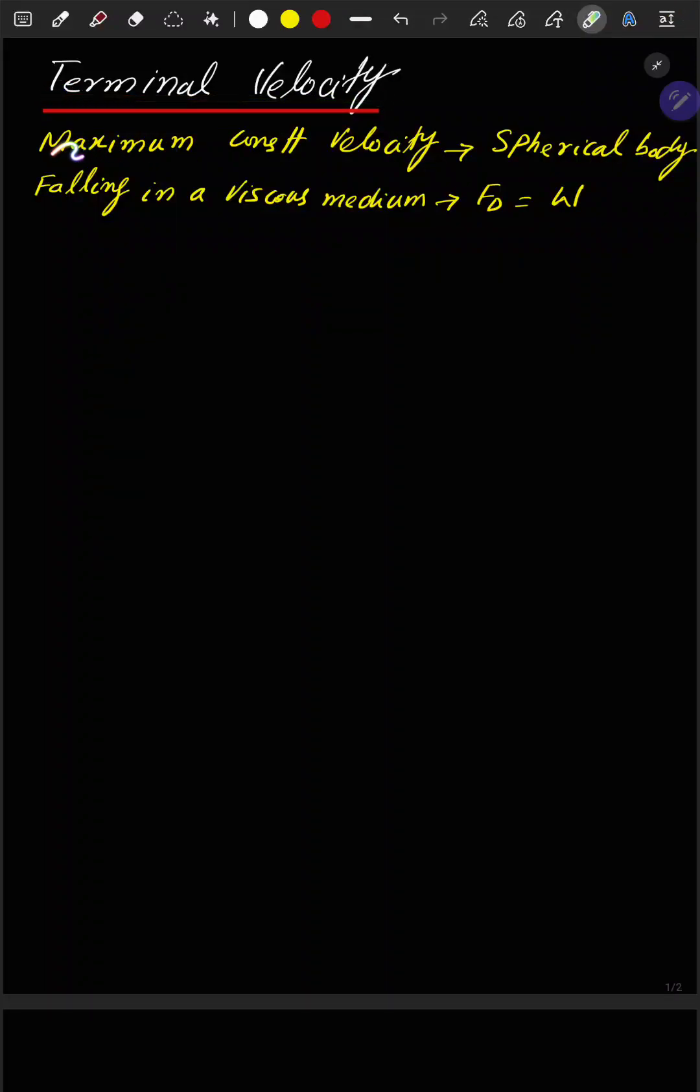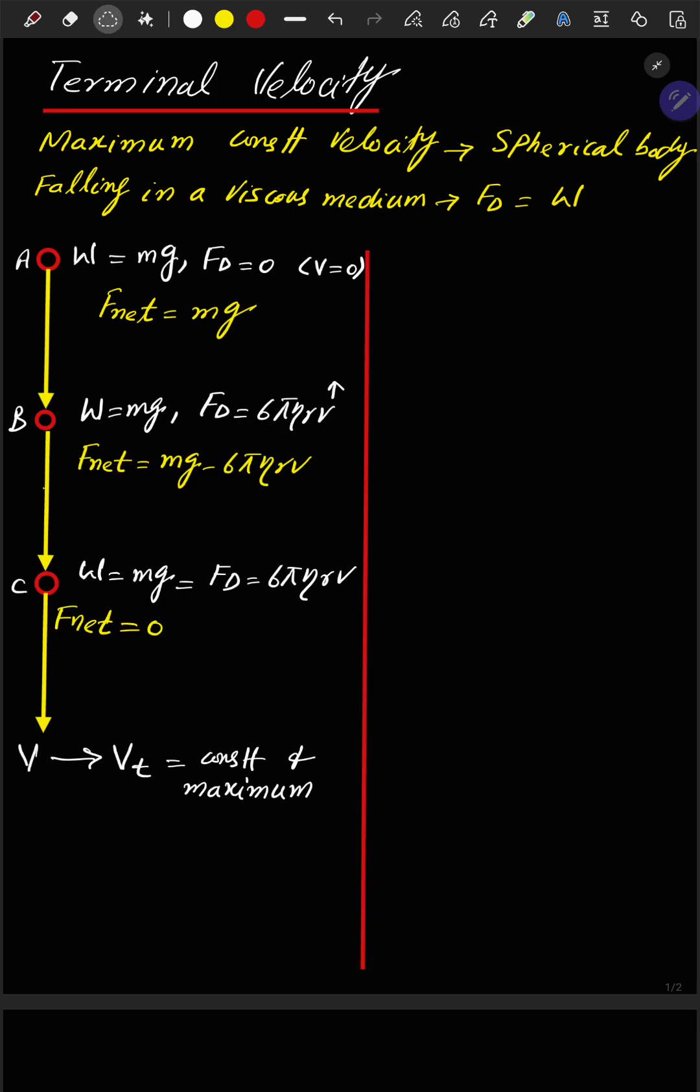Terminal velocity is the maximum constant velocity gained by a spherical body falling in a viscous medium when the drag force equals the weight of the object. Before it starts falling, the weight is mg and the drag force is zero.